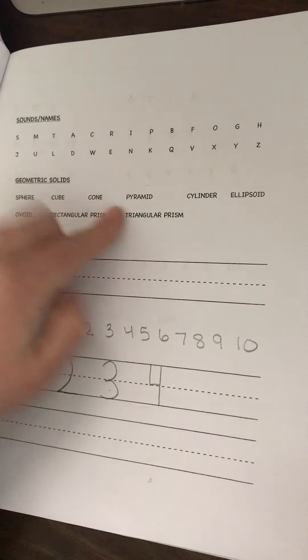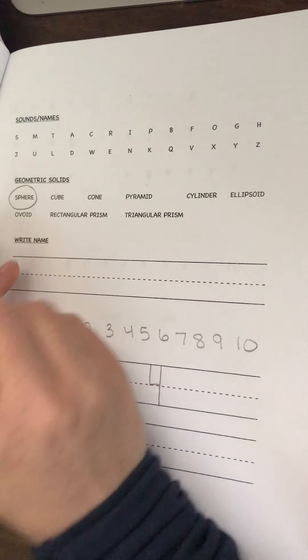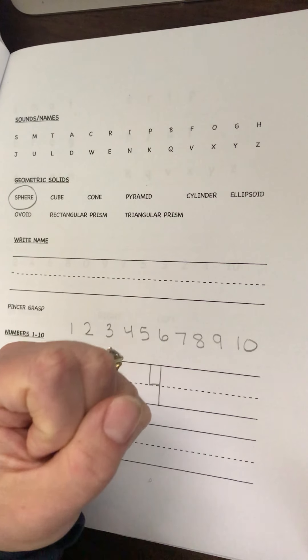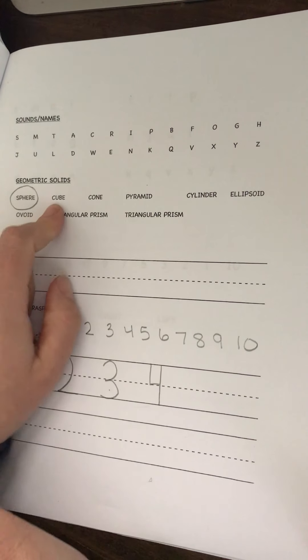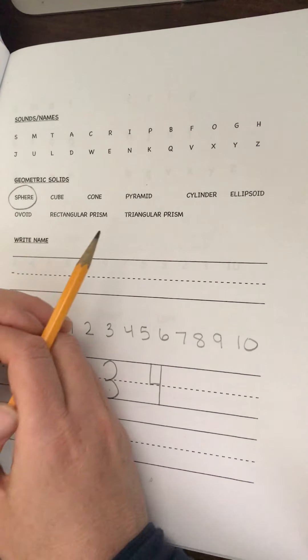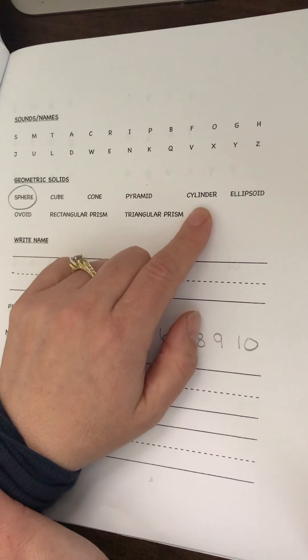Geometric solids - we didn't really go over these. We did talk about a sphere because a sphere is just a ball or the planet Earth is a sphere. You can find those around your house. A cube is just like a three-dimensional square. A cone is like an ice cream cone. Pyramid, cylinder.